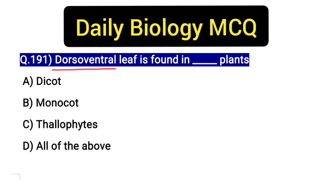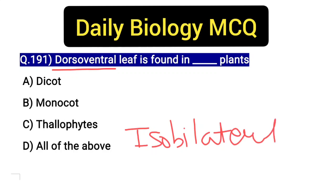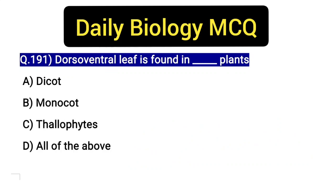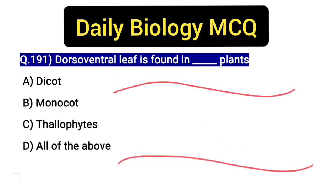Dorsoventral leaf — another term used is isobilateral leaf. This anatomy of the leaf depends on the internal structure of the leaf. The dorsoventral leaf has a distinct upper and lower surface.